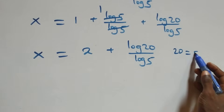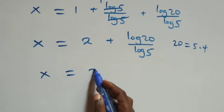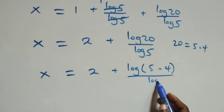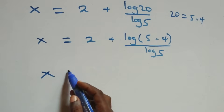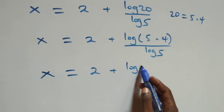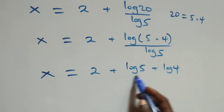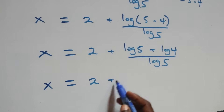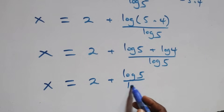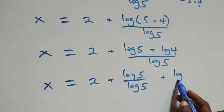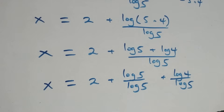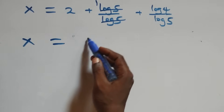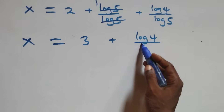We can express 20 as 5 times 4, which implies x equals 2 plus log(5 times 4) over log 5. This follows the product rule, giving x equals 2 plus log 5 plus log 4, all over log 5. We separate into two fractions: x equals 2 plus log 5 over log 5 plus log 4 over log 5. Log 5 cancels, leaving 1, so x equals 2 plus 1 plus log 4 over log 5, that is 3 plus log 4 over log 5.